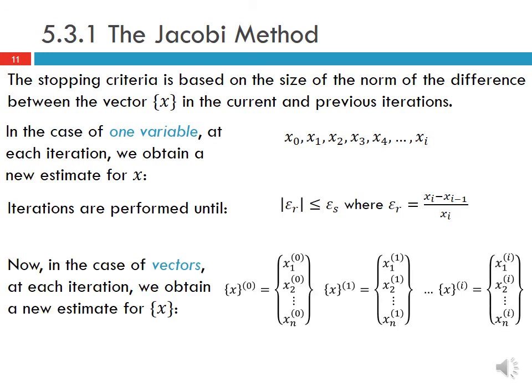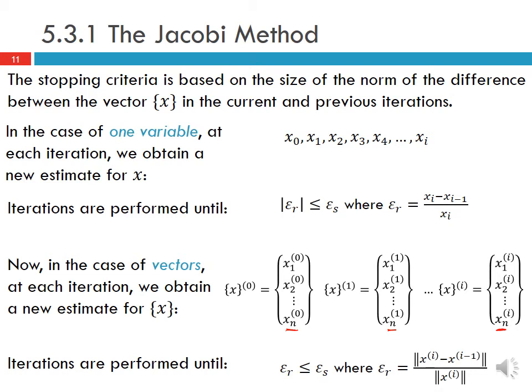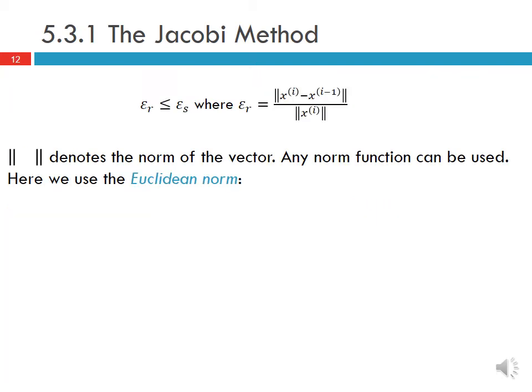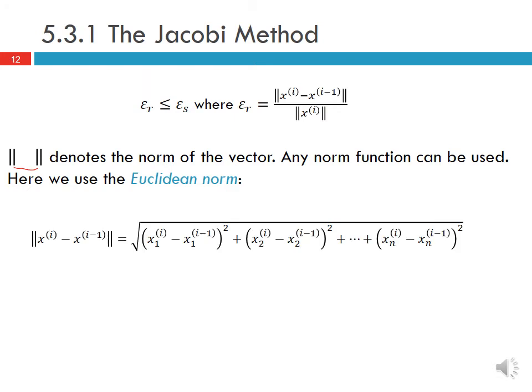In the case of vectors, at each iteration we obtain a new estimate for our vector x. Starting from x₀, an initial vector with n components, we get x₁, and then at our current estimate xᵢ we get a new vector with n components. The iterations are performed until εᵣ is less than or equal to εₛ, where εᵣ is defined as the norm of (xᵢ minus xᵢ₋₁) divided by the norm of xᵢ. Here we use the Euclidean norm: the norm of (xᵢ minus xᵢ₋₁) is the square root of the sum of squares of the component differences, and the norm of xᵢ is the square root of the sum of squares of the components.